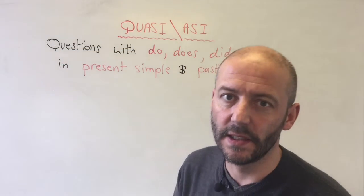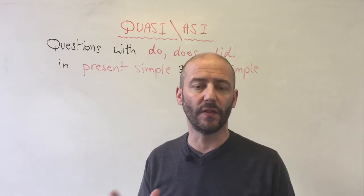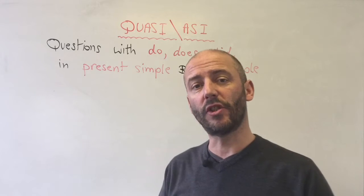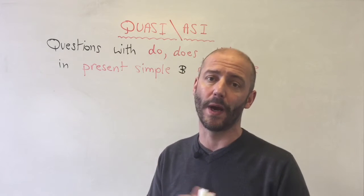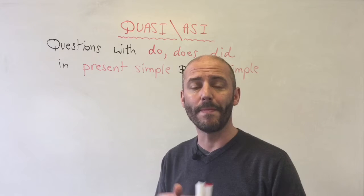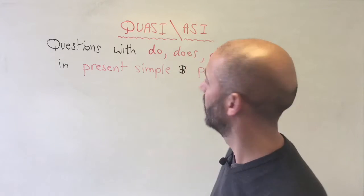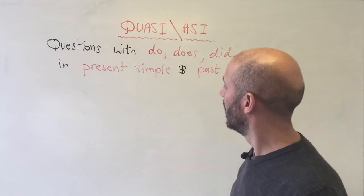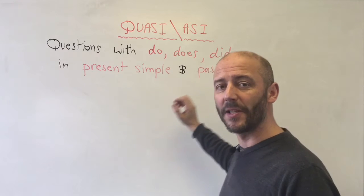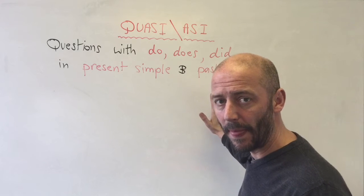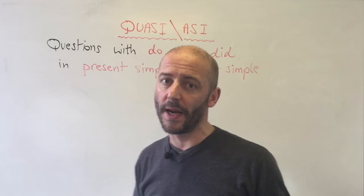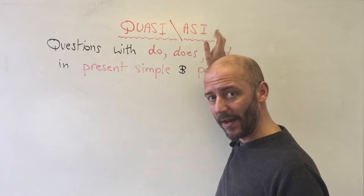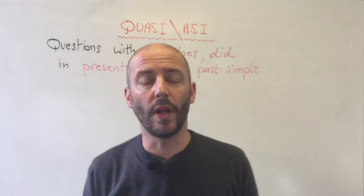Welcome to today's lesson. This is aimed at elementary and pre-intermediate students, and I'm going to show you a very simple way of remembering how to make questions with do, does, and did in present simple and past simple. We do this by remembering QUASI and ASI.